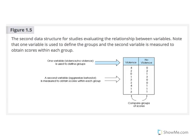Now, let's look at Figure 1.5 to contrast how data is collected within data structure 2. In this case, an experimental study. First, we know that we are comparing two groups that have been defined by an independent variable. In this case, the independent variable is a television program that was viewed.